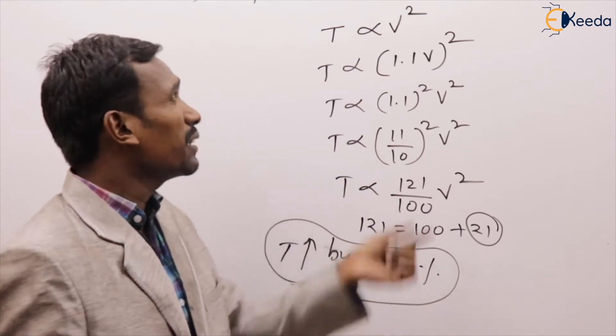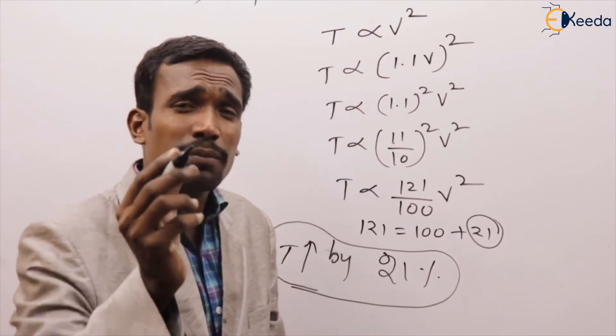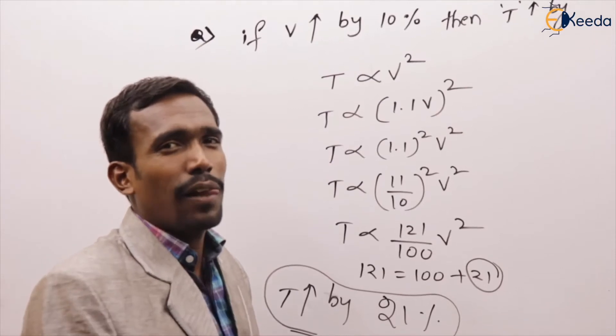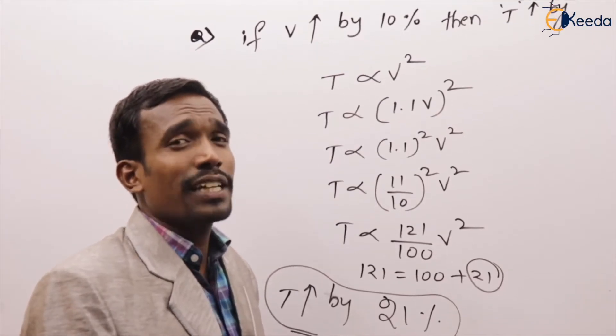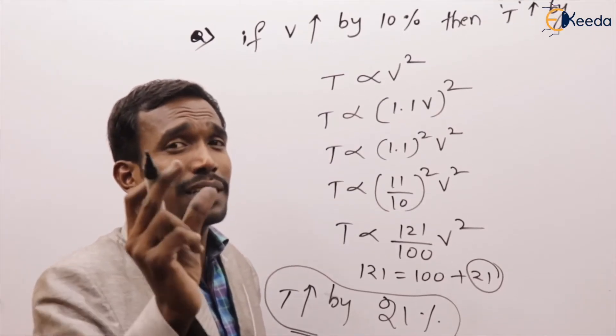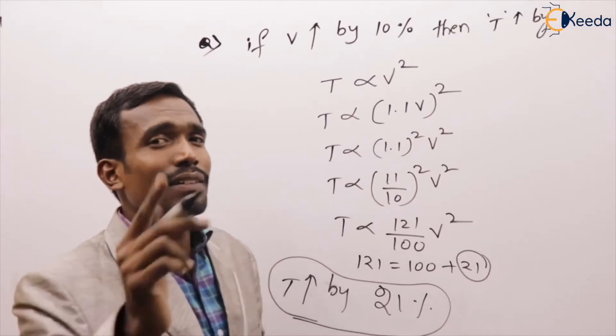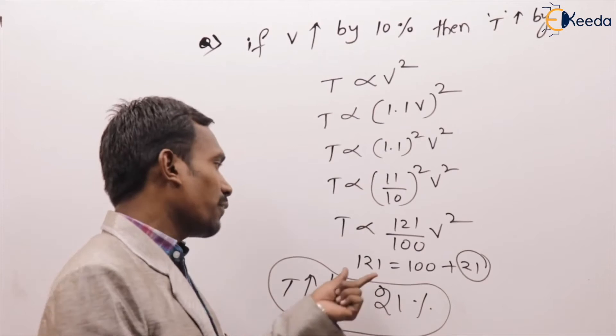Simply, if voltage increased by 10%, that is 11 squared equals 121. So torque increases by 21%.